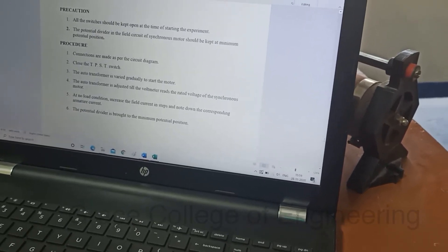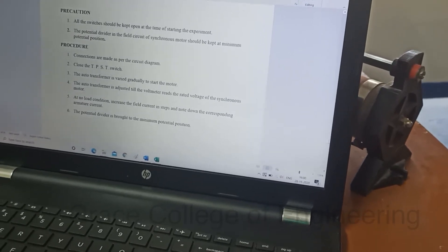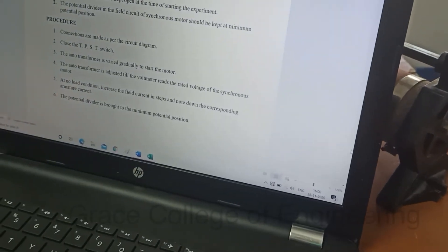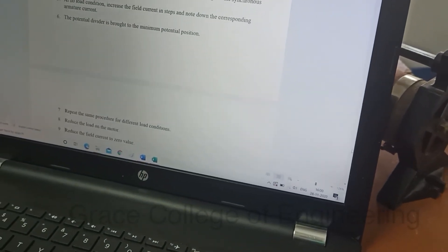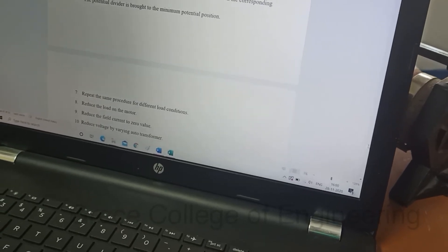At no load condition, increase the field current in steps and note down the corresponding armature current. By using the rheostat, bring it to the minimum position and repeat the same procedure for different load conditions.